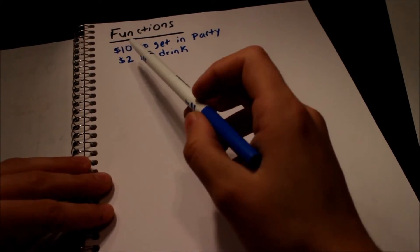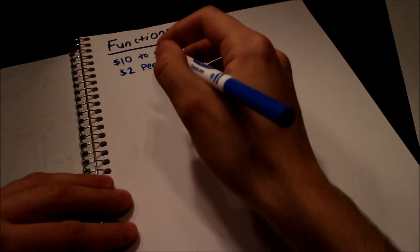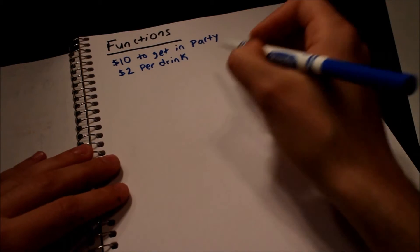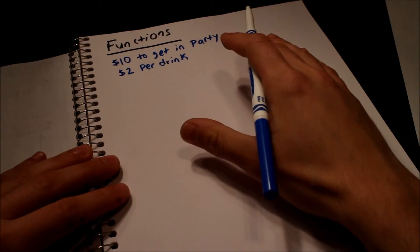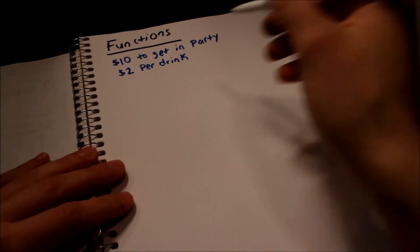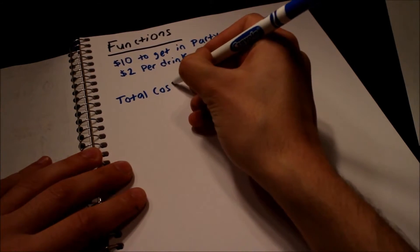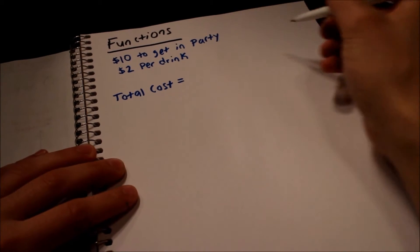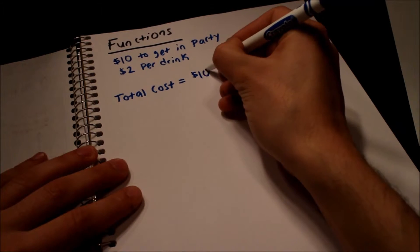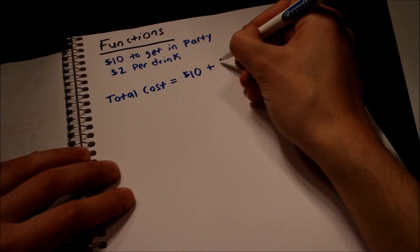So let's model this. It's ten bucks to get in the party, two bucks for every drink that you want to have. A function will basically tell us how much the total cost of the party will be at different drink rates. If you don't have anything to drink it'll be a certain price. If you have four drinks it'll be a different price, right? It's a function of how many drinks you have. So let's write this. Total cost - that's how much we're going to spend. What is that equal to? Well it costs ten dollars just to get in the party, right? Ten dollars to get in. Plus two dollars.